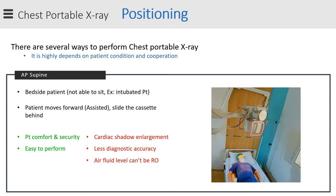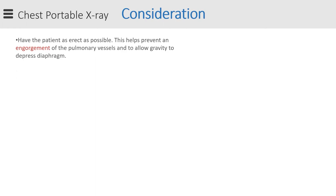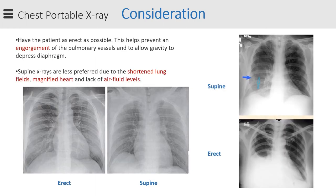Be mindful of the patient's IV lines, tubings, and other medical devices. Regarding important notes on chest portable positioning: have the patient as erect as possible, as this helps prevent engorgement of pulmonary vessels and allows gravity to depress the diaphragm. Supine x-rays are less preferred due to shortened lung fields, magnified heart, and the inability to evaluate air-fluid levels.